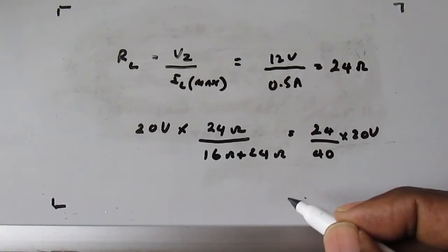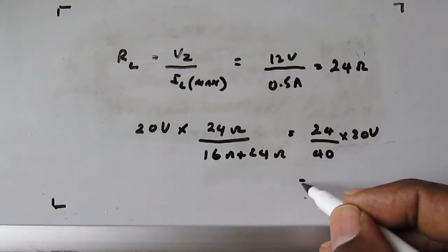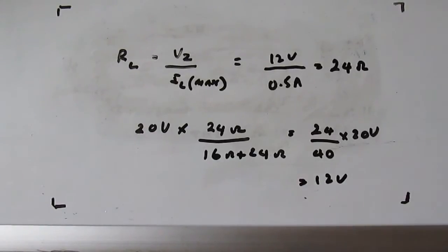times the 20 volts. And that gives us, if you work that out, you will see that equals 12 volts, which is exactly equal to the Zener diode voltage. So this circuit should operate at the extreme condition of a minimum voltage of 20 volts input and a maximum load of 500 milliamps or 0.5 of an amp.